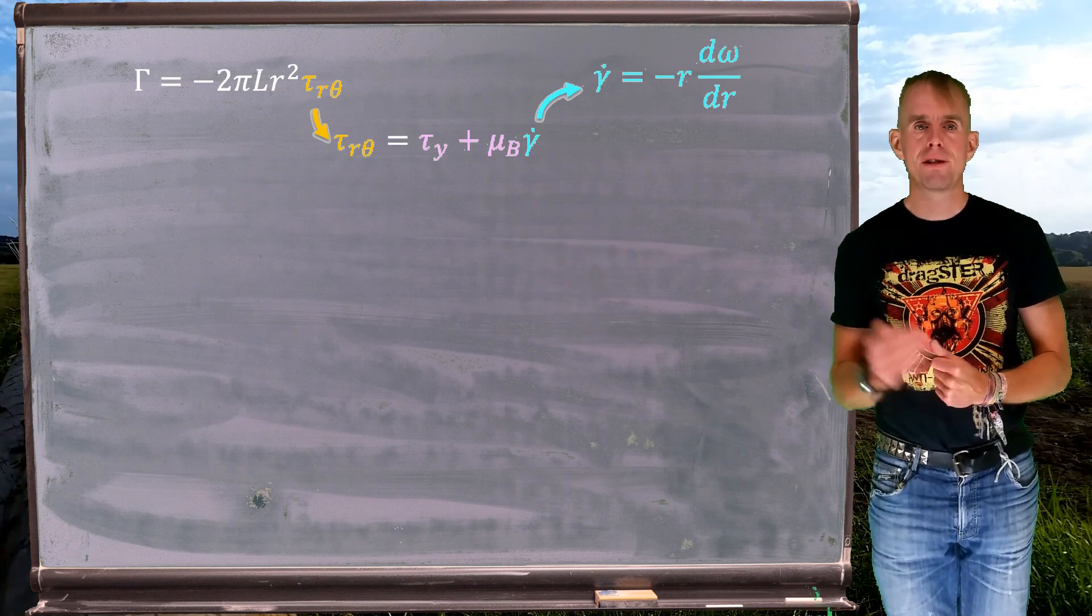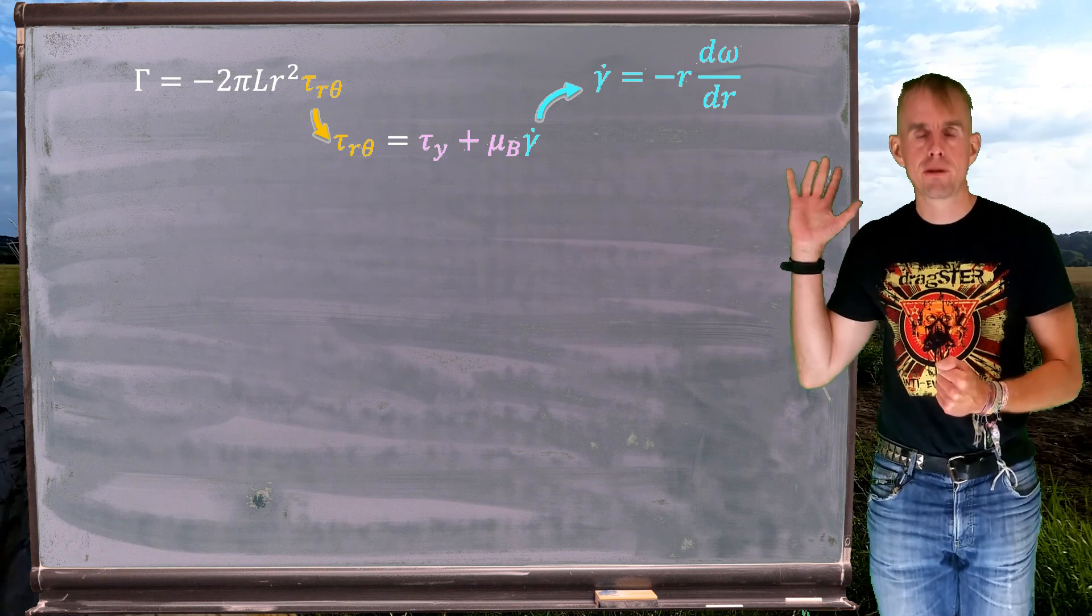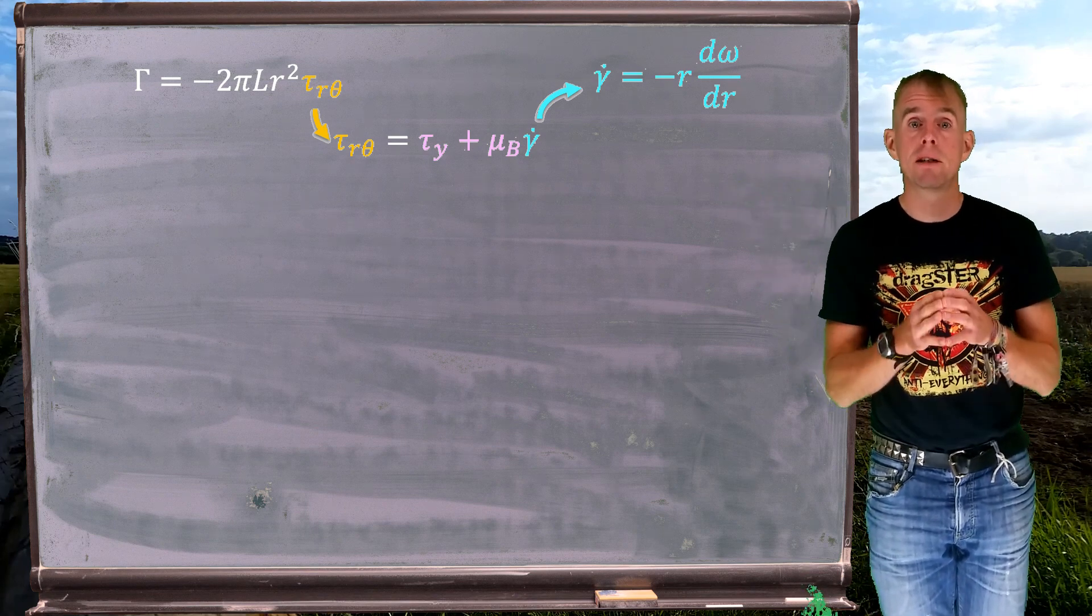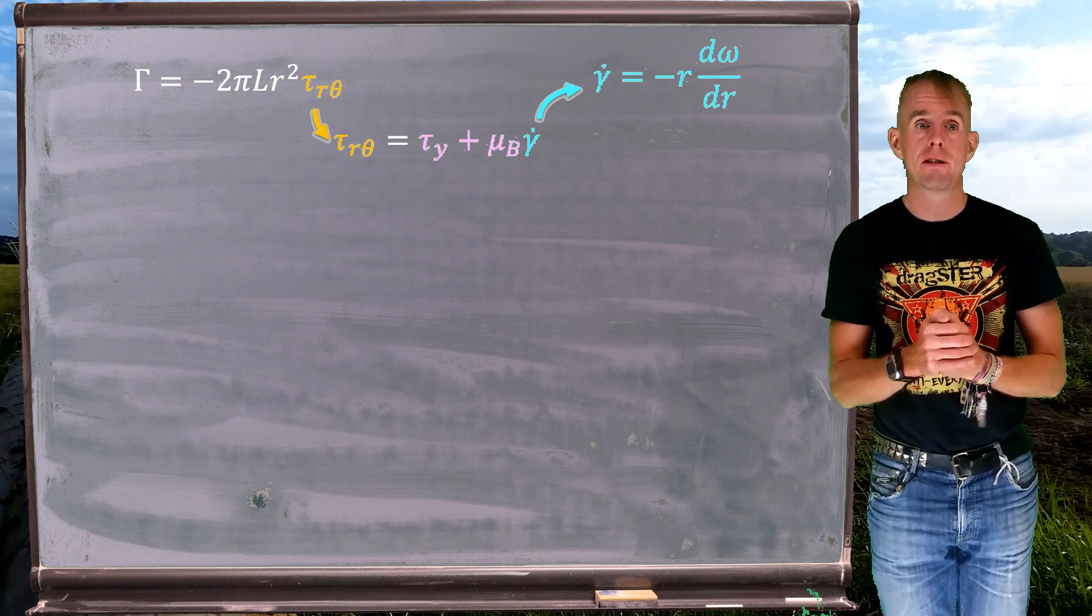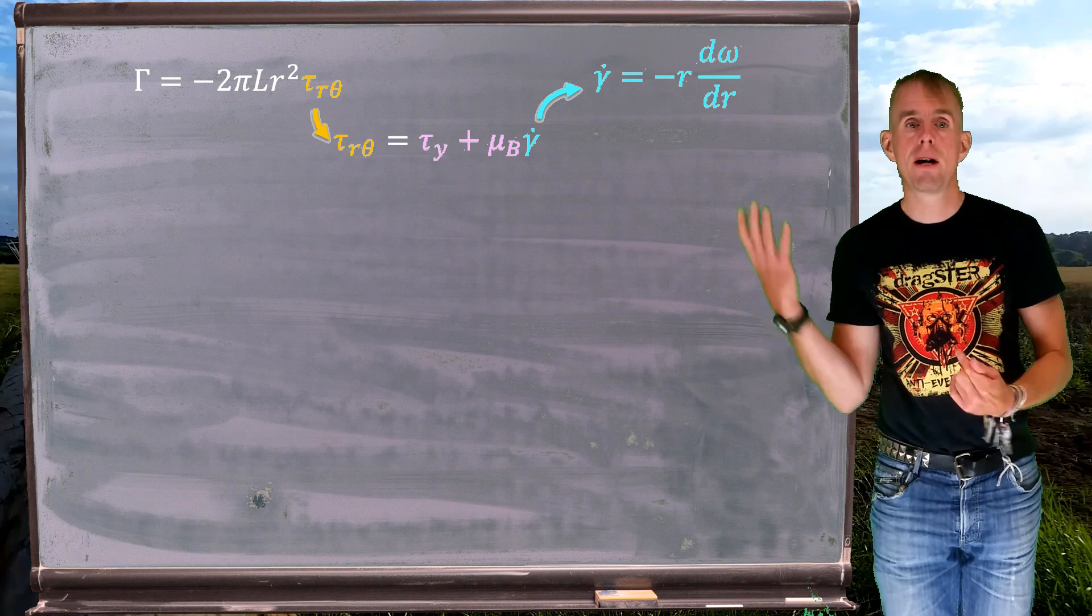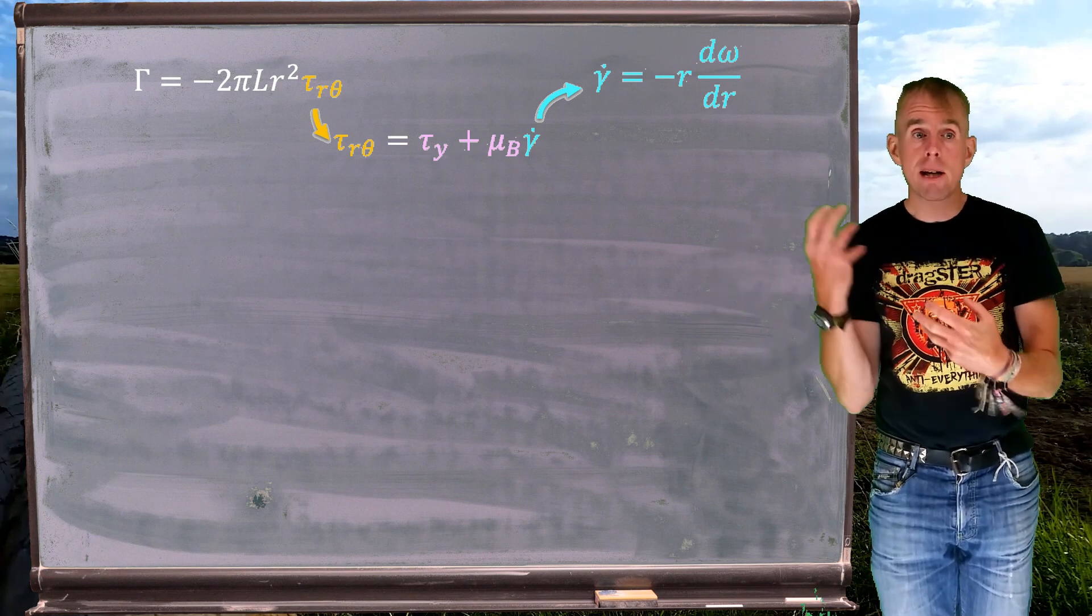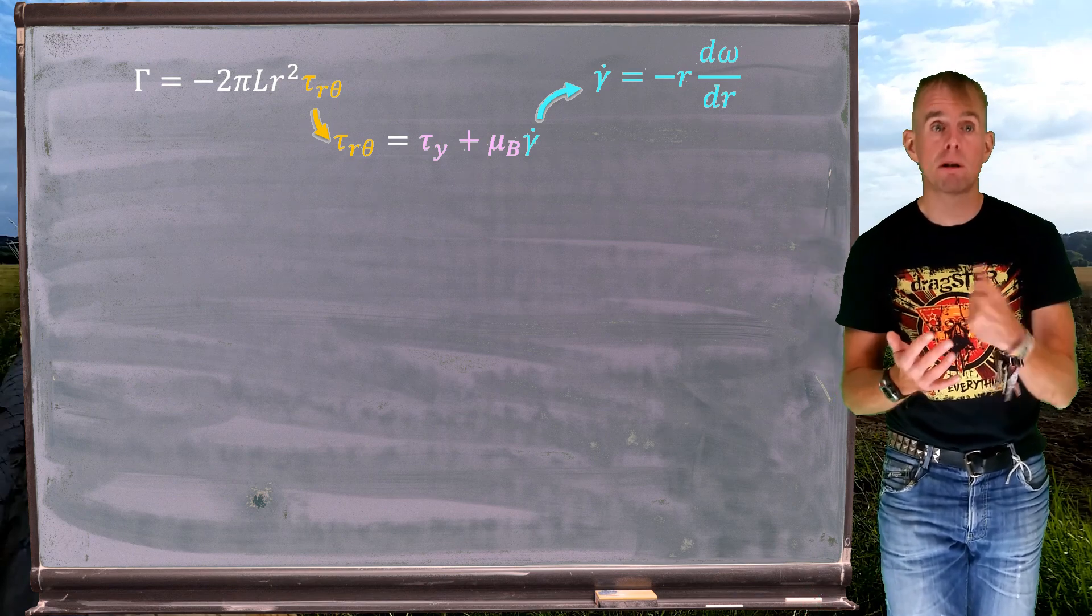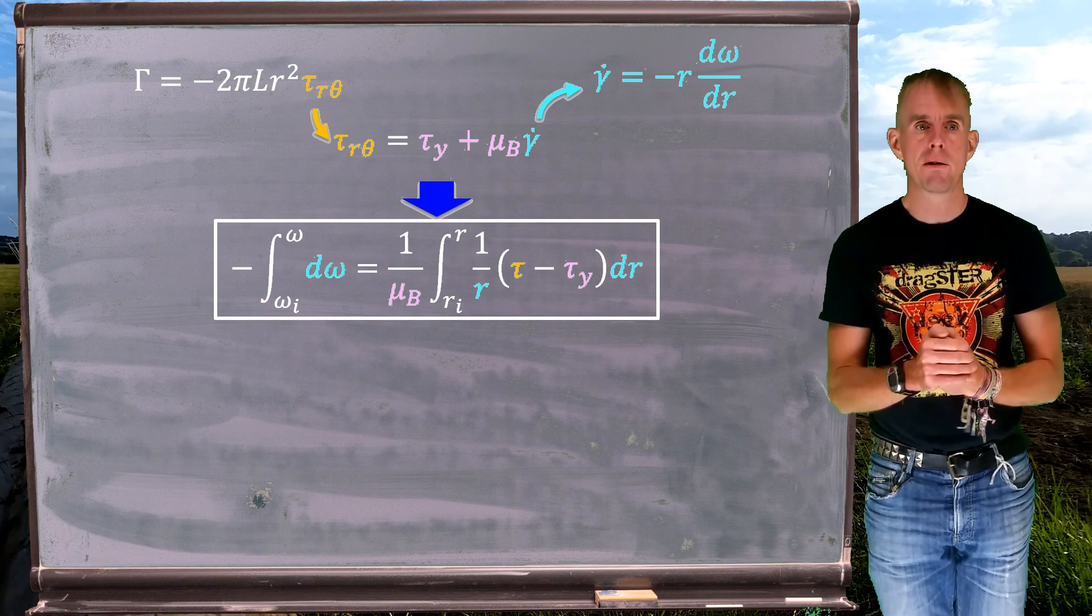So let's do this now in the context of my Bingham fluid. So there is the workflow on the board again, but the middle component has changed because I've inserted the Bingham constitutive equation. So we know that my tau r theta is equal to tau y plus mu b gamma dot. So I'm going to insert the expression for my shear rate gamma dot, and I'm going to rearrange the Bingham expression such that the subject is gamma dot.